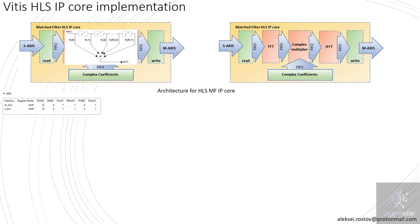Let's turn to the architecture for the HLS matched filter IP core implementation. There are two architectures: implementation in time domain and frequency domain. Both IP cores operate with AXI stream interfaces — 32 bits, with 16 bits for the real part and 16 bits for the imaginary part. Both implementations use pre-computed hard-coded complex coefficients. The time domain implementation is based on an FIR discrete filter — a simple FIR filter with taps where the number of taps corresponds to the number of complex multipliers.